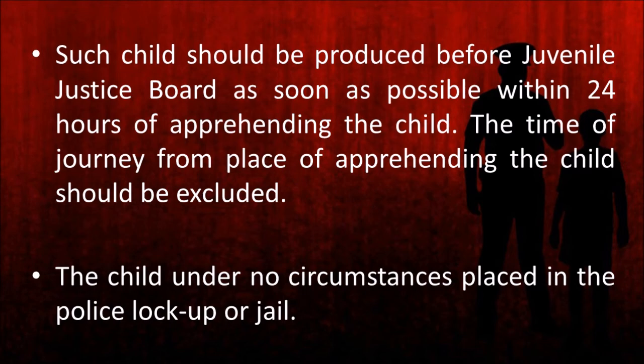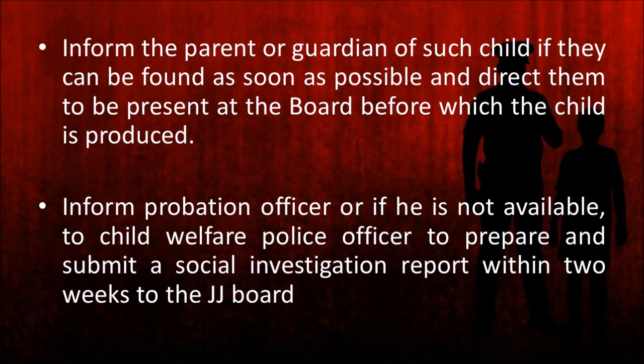The next function of these authorities is to inform the parent or guardian of the apprehended child, if they can be found, as soon as possible, and to direct them to be present at the Juvenile Justice Board before which the child will be produced. In addition, they also have to inform the probation officer, or if he is not available, the child welfare police officer himself has to prepare and submit a social investigation report within two weeks to the Juvenile Justice Board.